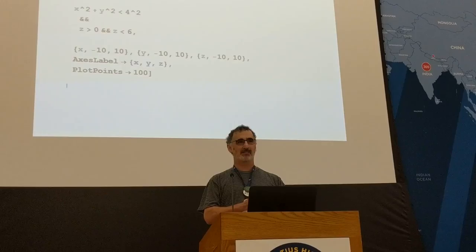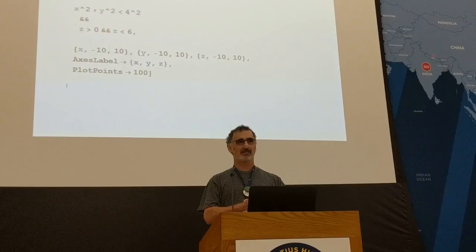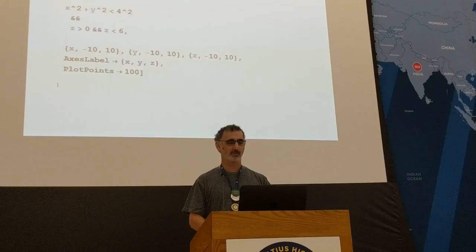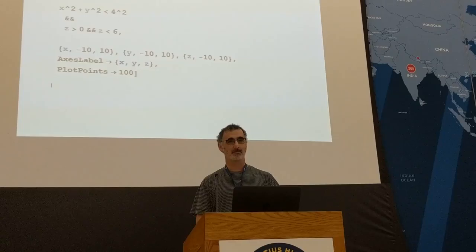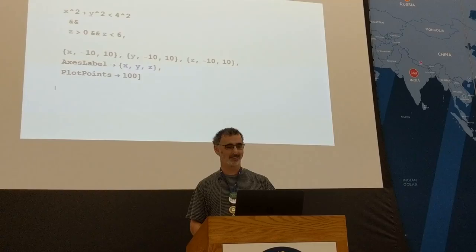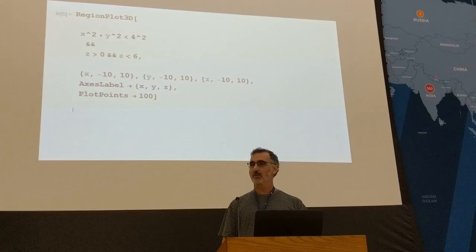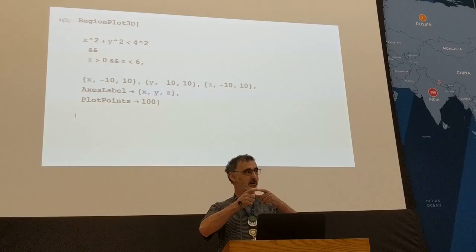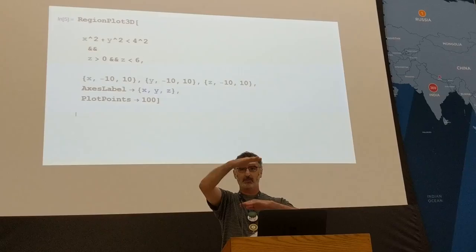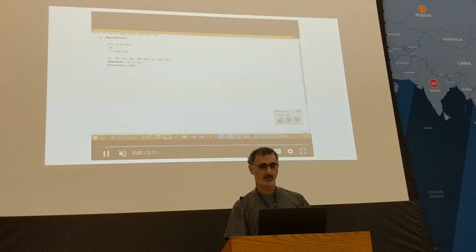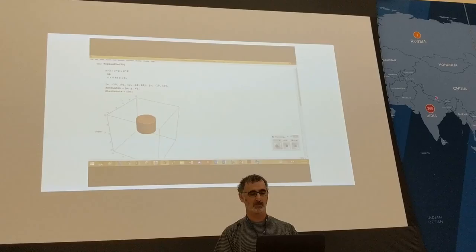So here's the second one. I changed the equations here, so you have about five seconds to tell me what you think that's going to be. It's a cylinder. We have x squared plus y squared less than four squared — that's a circle with a radius of four in the xy direction, so it goes on forever that way. Then z is limited. So it's going to create a cylinder. We have the process and we render it — and there's the cylinder.